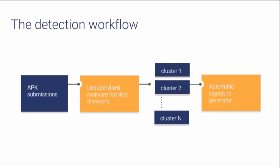The algorithm for automatic malware signature generation is placed within a pipeline common to many antivirus industries. The idea is that there is a submission of new APKs every day, and those APKs are analyzed through machine learning techniques — mostly unsupervised techniques — in order to automatically infer new malware families, that is, clusters. And in the end, for each malware family, you want to generate a signature. This is where my algorithm comes in.